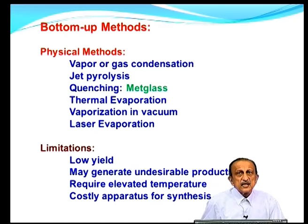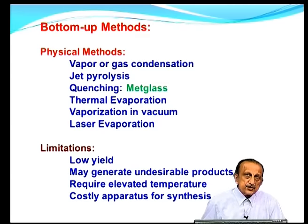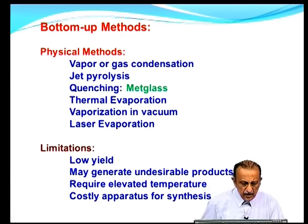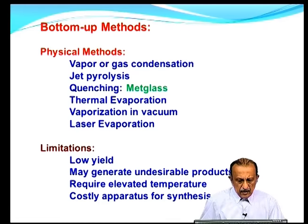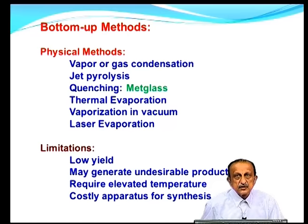Most of these techniques listed here, except really that of met glass technology, are of low yield — you do not get much nanostructure material given the amount of material one starts with. They may require elevated temperature subsequently to obtain useful nanostructured material and often involve costly apparatus for synthesis. But all of these constitute physical methods that are bottom-up in nature.